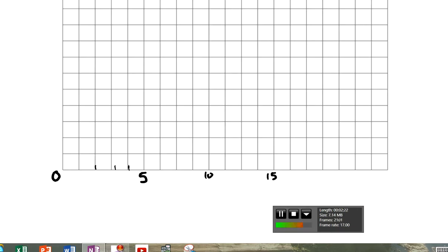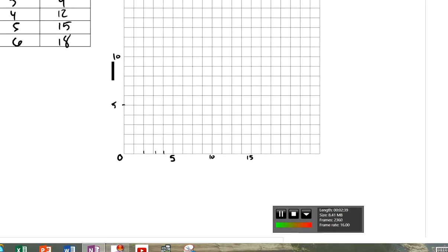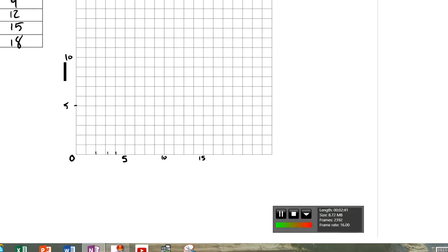So real quickly, I get a sense of how many each one of those lines is worth. Each line is worth one if it takes five to get to five. And then the same thing going up. So it doesn't take a lot to plot these. So at one, I would plot the number three. At two, I would plot the number six.